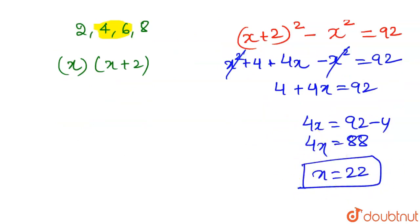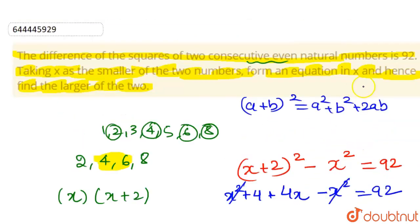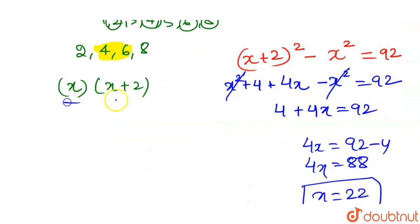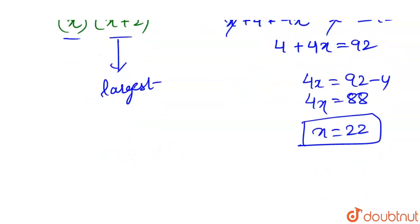We have to find out the larger of the two, so the larger number between x and x plus 2 is x plus 2. Our largest number is x plus 2, that will become 22 plus 2, that is 24. So the two numbers are 22 and 24.